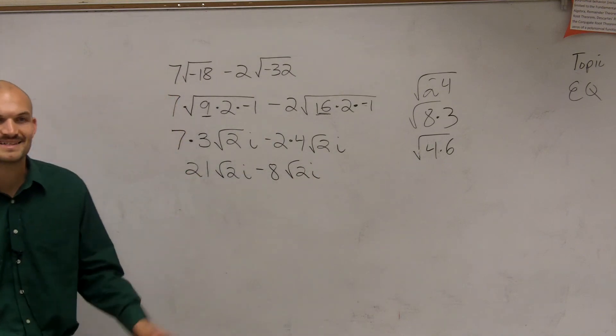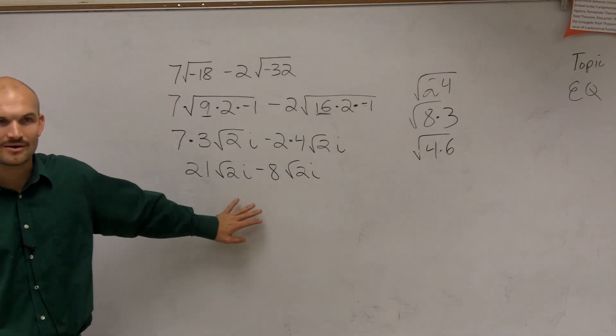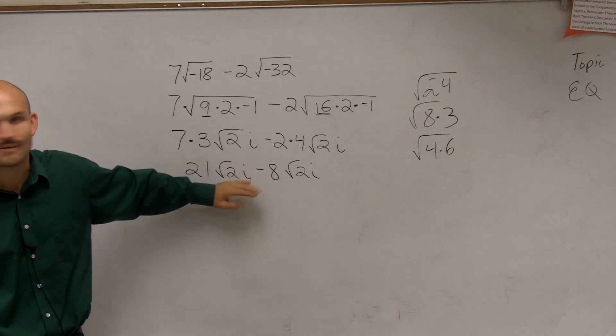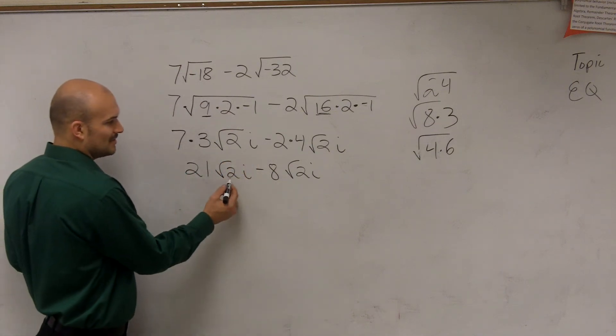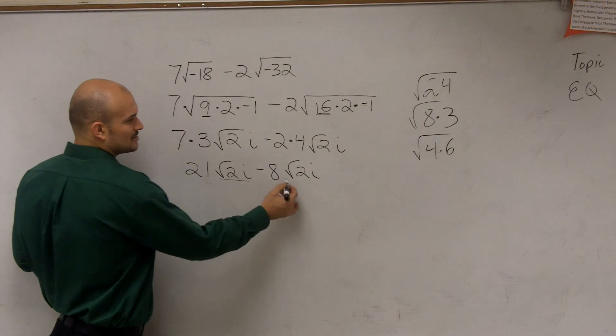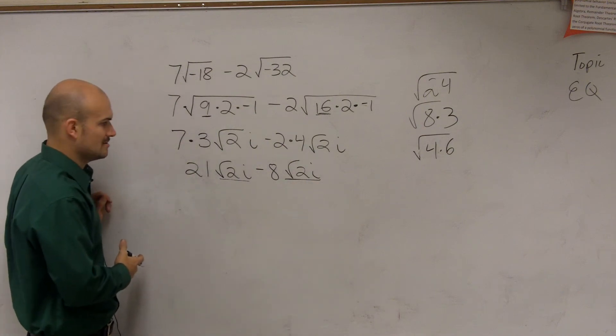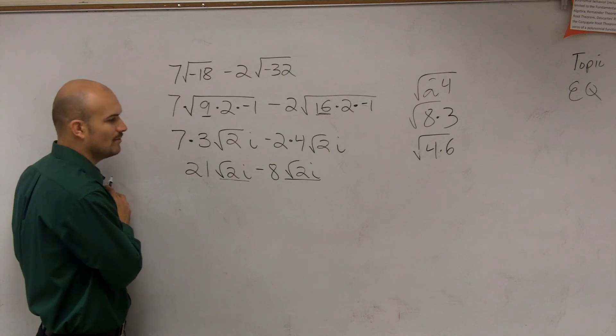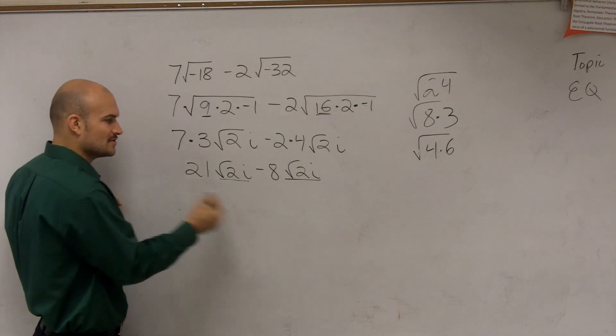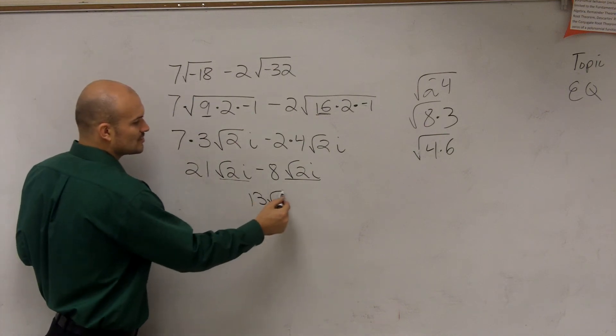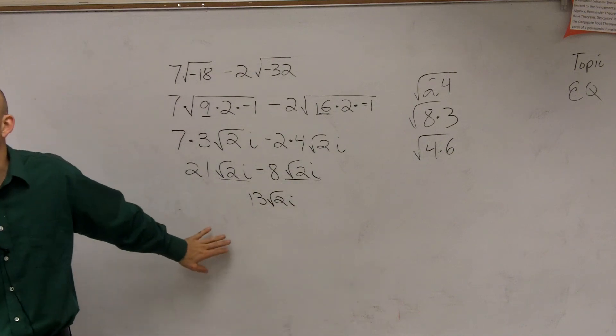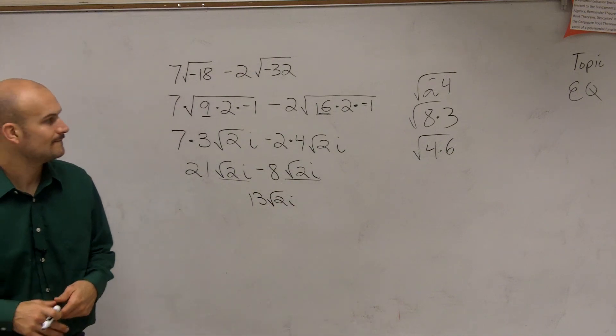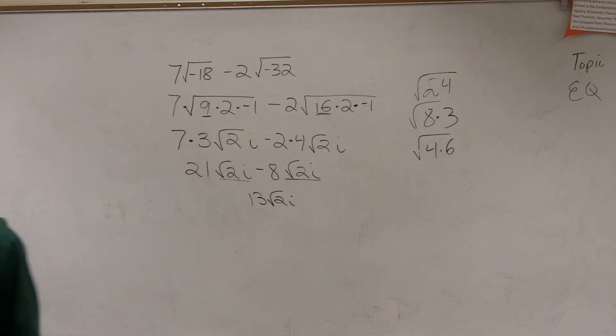And actually, I just noticed the problem that I did, the work I did was actually wrong. I just noticed that because I multiplied for some reason. But you guys notice, are these like terms? Square root of 2i and square root of 2i? Yeah, so just do 21 square root of 2i minus 8 square root of 2i. It's 13 square root of 2i. My work on the board was actually wrong. My apologies.